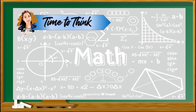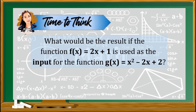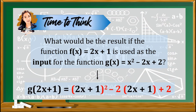First, try to think of this. What would be the result if the function f equal to 2x plus 1 is used as the input for the function g equal to x squared minus 2x plus 2? Using the rule in evaluating functions, the result would be the square of (2x plus 1) minus 2 times (2x plus 1) plus 2. As you can see here, if a function is used as an input, it leads to function composition.